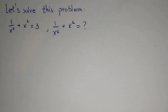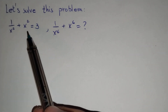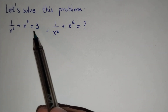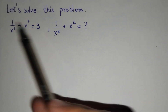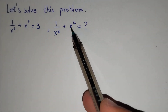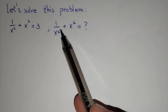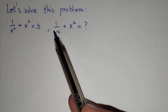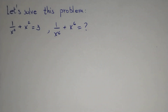Hi everyone! In this video we will solve this problem: 1 over x squared plus x squared equals 3. For this equation we should find x to the power 6 plus 1 over x to the power 6. How should we solve this problem?